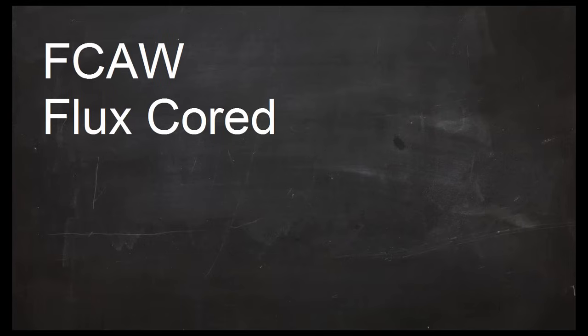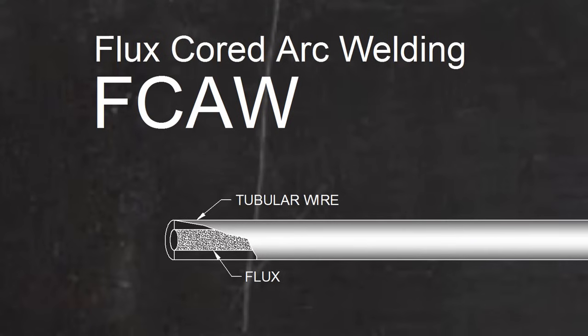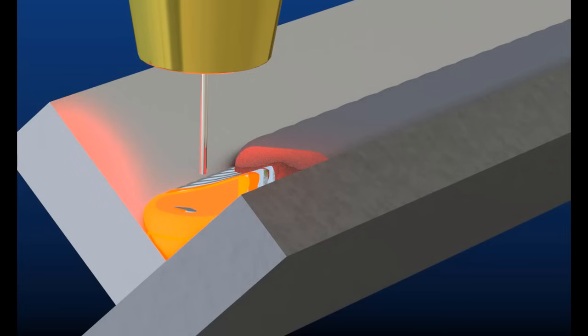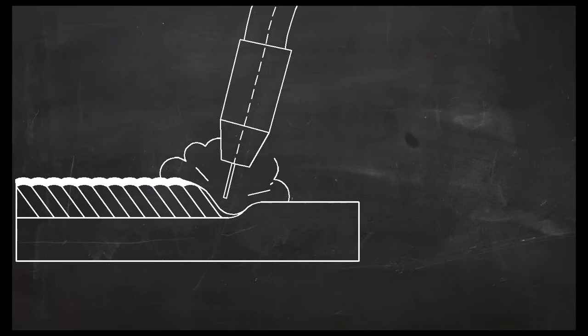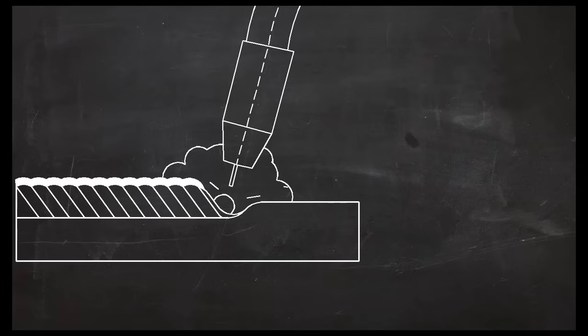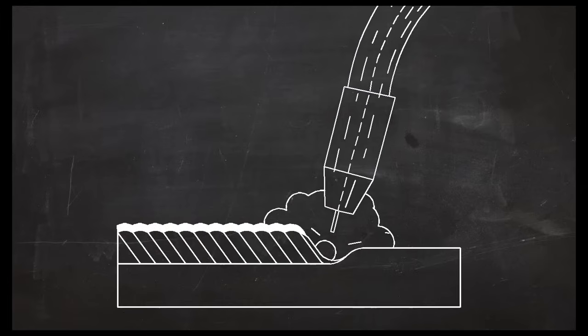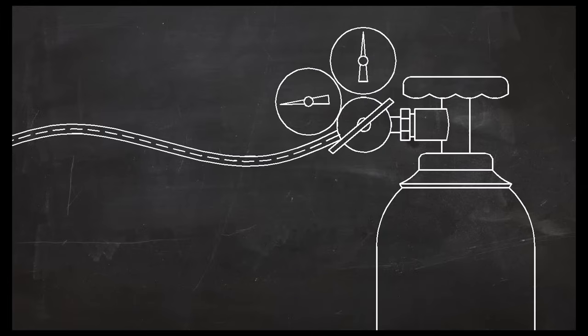So in summary, flux core is an electric arc welding process. It uses a consumable tubular wire electrode that contains flux material on the inside. Filler material is added to the weld automatically as the wire electrode melts. In self-shielded flux core, the weld is protected by the flux itself, and in gas-shielded flux core, the shielding gas comes from a high-pressure cylinder.